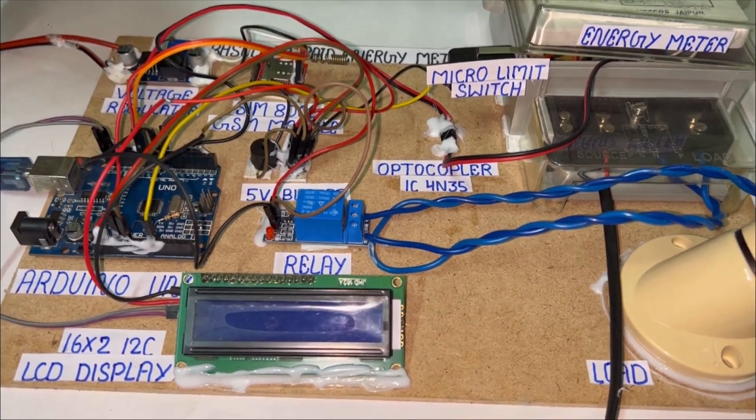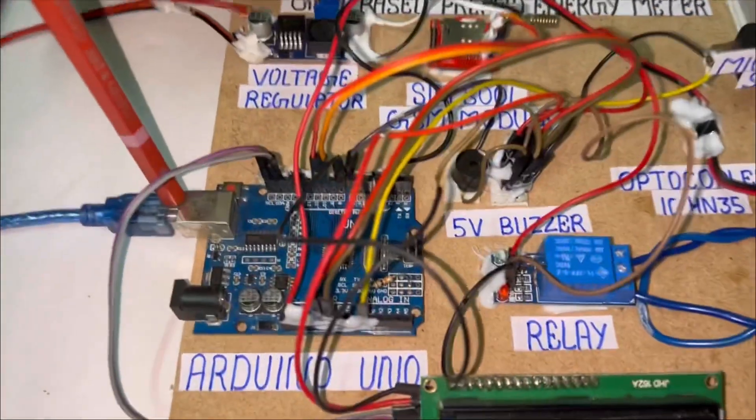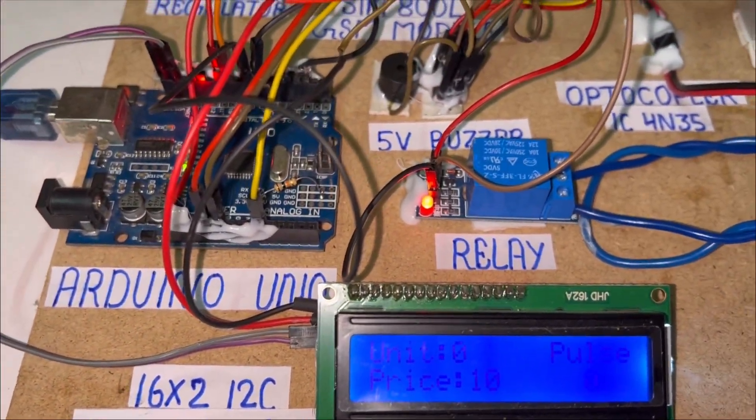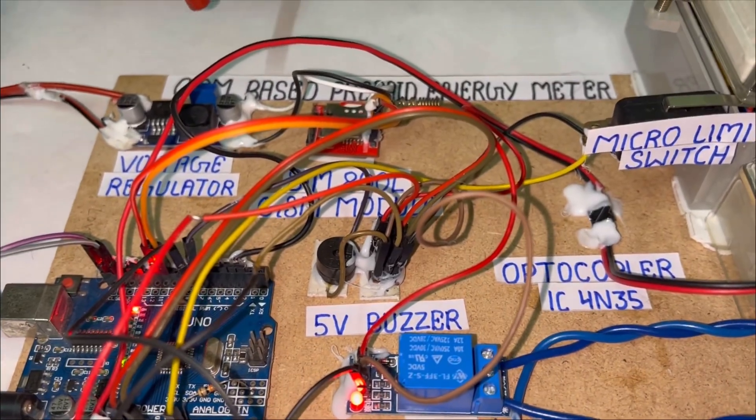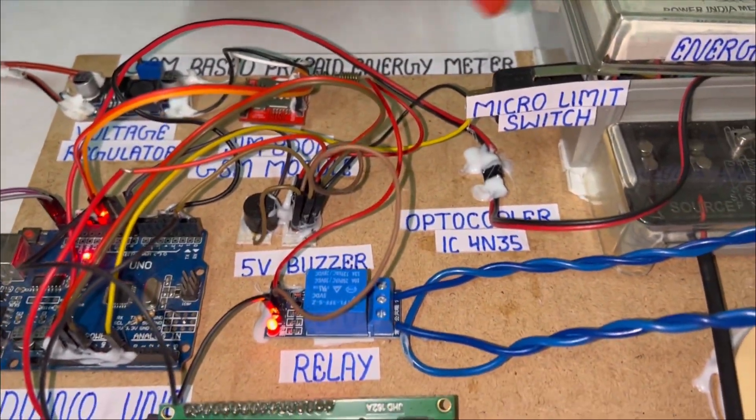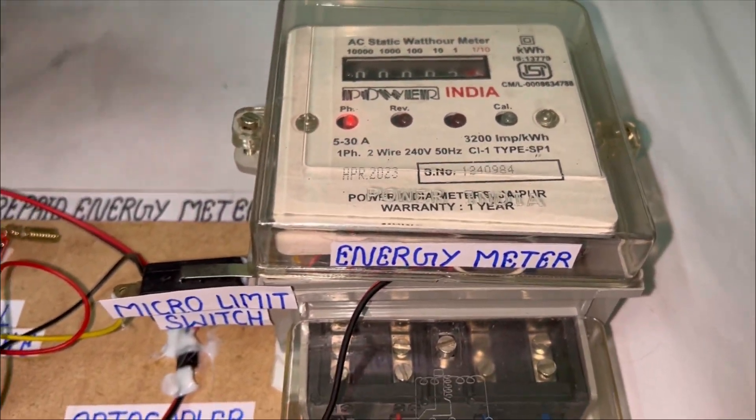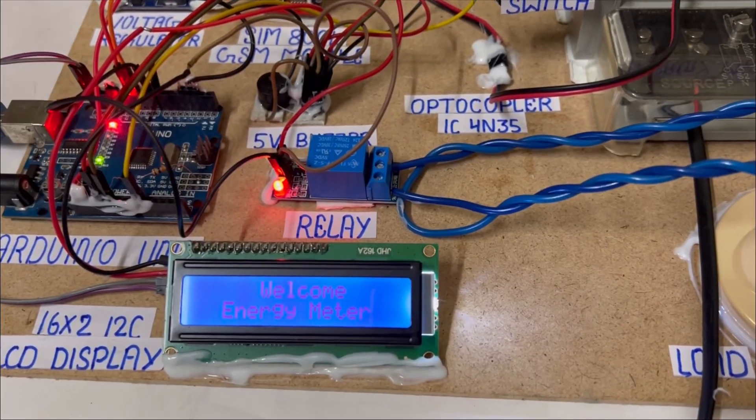Now I am giving the power supply for the Arduino using my laptop, and I will give here the individual connection for the GSM module as you know that it takes lower voltage. I'm going to connect the energy meter to another power supply.